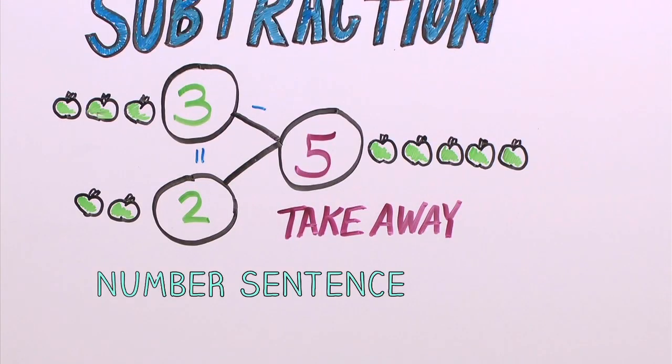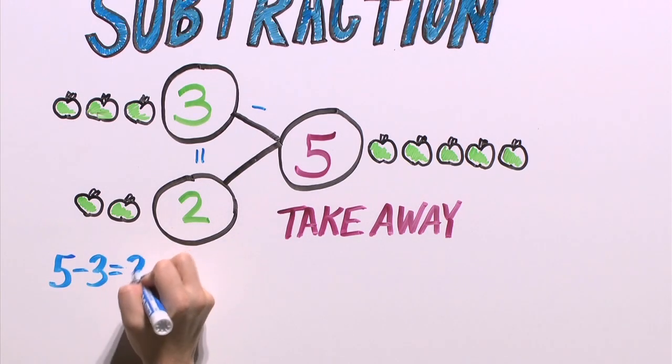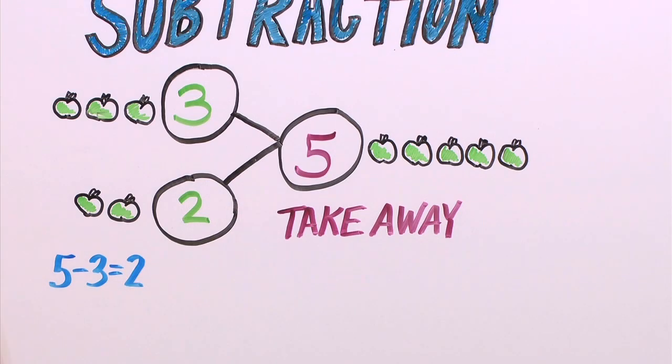The number sentence for this number bond looks like this. Five, take away three, equals two. This number bond shows us another subtraction fact, too.